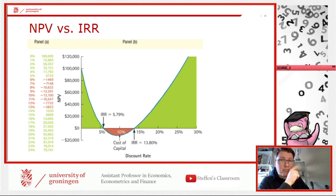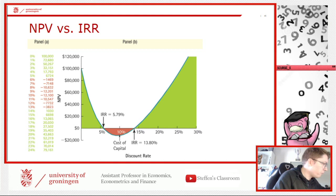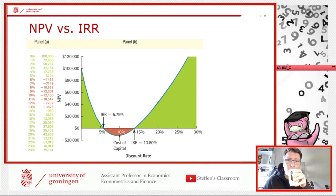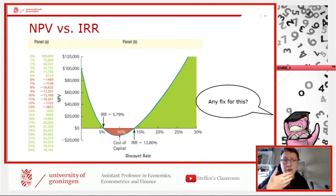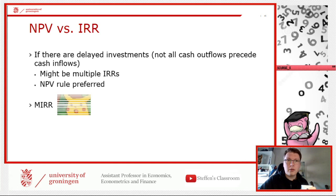When you are faced with a delayed investment profile like this, the IRR rule produces two numbers — for example, you might take the project if the opportunity cost falls in a certain range, or above another threshold. This looks weird and is ambiguous. The NPV rule handles this correctly, which is why you should use NPV in such cases.